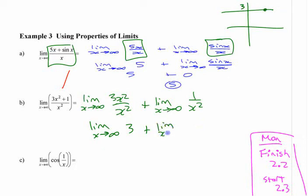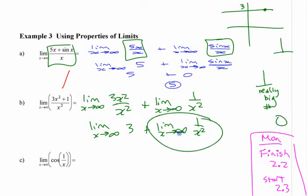The limit of the other one, you can't really substitute in infinity, 1 over x squared. But you can think about it and say, instead of thinking 1 over infinity squared, don't look for the infinity button on your calculator. You just think 1 over really big number squared. What's 1 divided by really big number squared? Zero. It's like 1 over a really big number, basically 0.